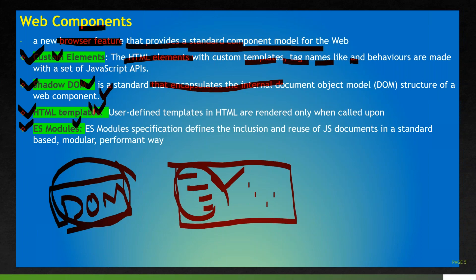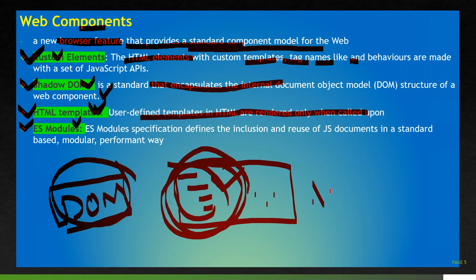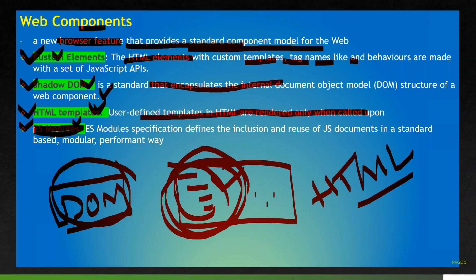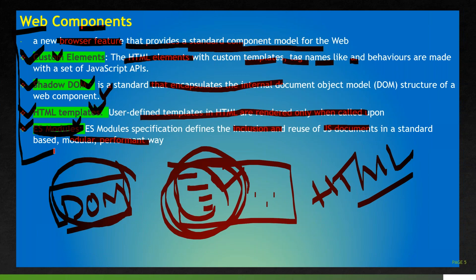In parallel we have HTML template — we define the template in HTML which is rendered on the page. Then ES modules: the scripting language uses the standard set by ECMAScript. The ES module specification defines the inclusion and reuse of JavaScript documents in a standard-based, modular, performant way. So simply put, web components are browser features which provide a standard component model for the web, with custom elements, shadow DOM, HTML template, and ES modules as the primary characteristics.